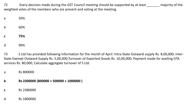Question 73: Calculate aggregate turnover of Asim Das Gupta for the month of April. Intrastate outward supply: Rs 8,00,000; Intrastate exempt outward supply: Rs 5,00,000; Turnover of exported goods: Rs 10,00,000; Payment made for availing GTA services: Rs 80,000. Payment for GTA services is not considered. Aggregate turnover = Rs 8,00,000 + Rs 5,00,000 + Rs 10,00,000 = Rs 23,00,000.